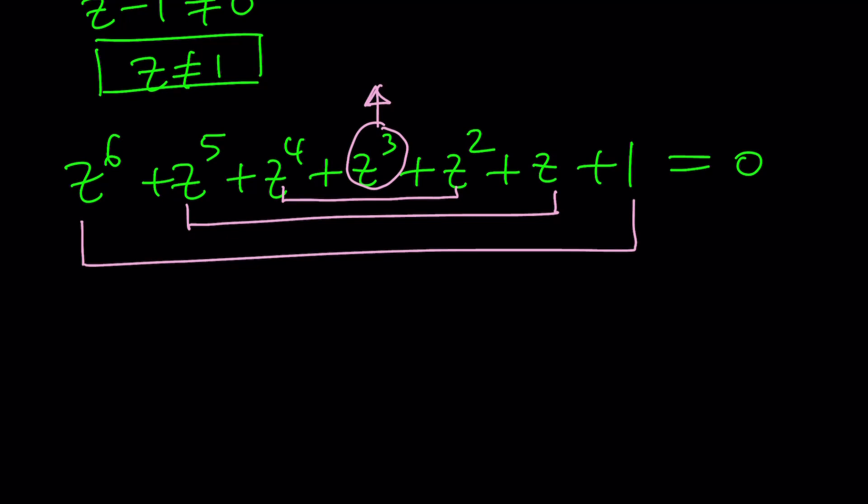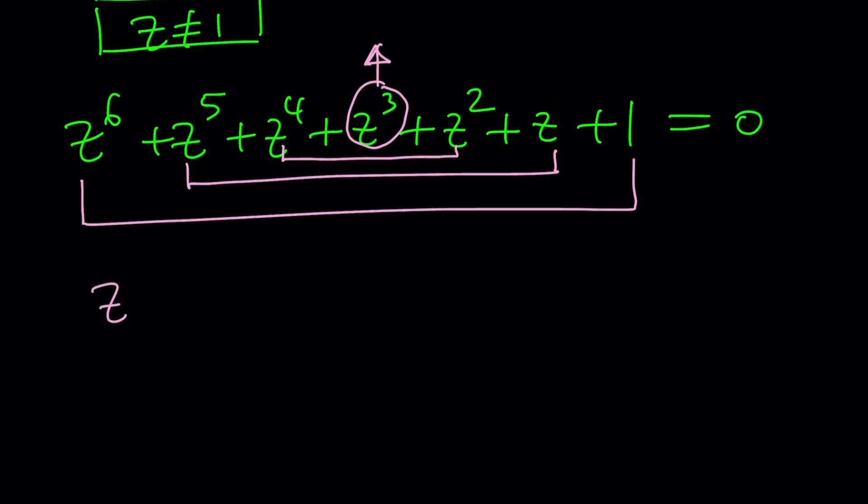When you divide Z to the 6th by Z cubed, you get Z to the 3rd. When you divide this by Z cubed, you get Z squared. You get Z. You get 1. And then you're going to start getting the negative powers or fractions: 1 over Z, 1 over Z squared, and finally 1 over Z cubed. Obviously, Z should not be 0. But we do know that. Z cannot be 0 because it's not going to work. 1 does not equal 0.